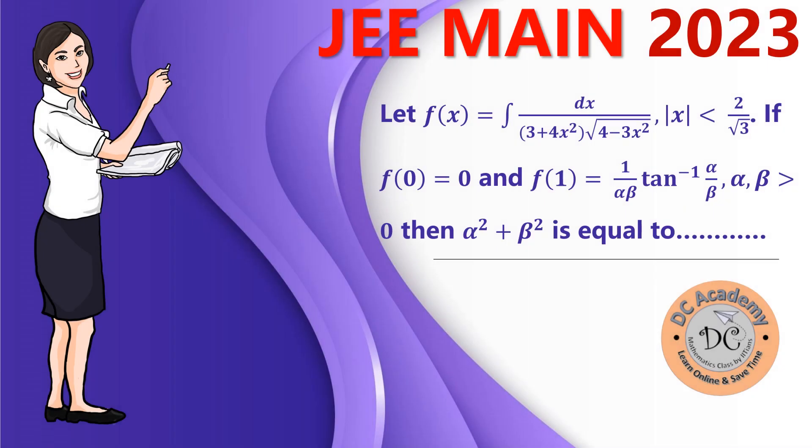Hi, in this video we are going to solve a problem which appeared in JEE Main 2023. Let's go ahead and understand the problem. We have a function f(x) defined as the integral of dx divided by (3 + 4x²) times the square root of (4 - 3x²). A few conditions are provided: f(0) and f(1). We need to find the values of α² and β².